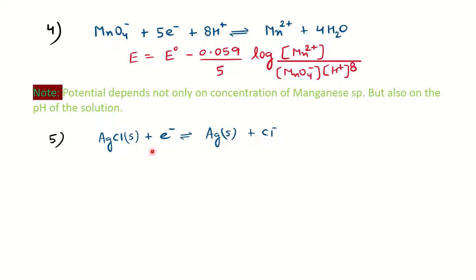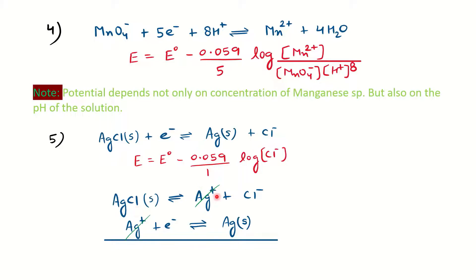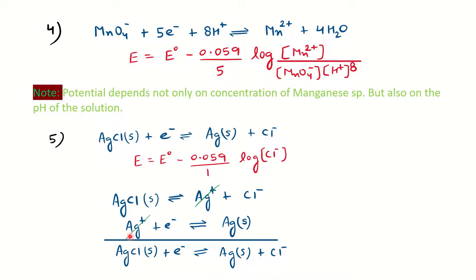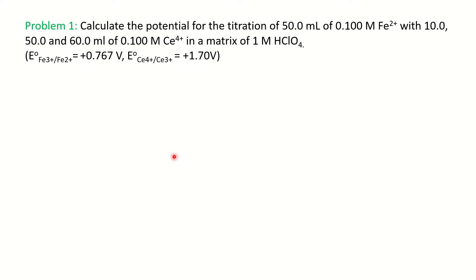The next example is AgCl solid gaining an electron to form silver (Ag) and chloride (Cl⁻). For the reduction potential, n = 1, and since AgCl and Ag are solids (concentration = 1), we write: E = E° minus 0.059 × log[Cl⁻]. This equation is derived by combining: AgCl(s) → Ag⁺ + Cl⁻, and Ag⁺ + e⁻ → Ag. Cancelling Ag⁺ from both sides gives the complete balanced equation for the AgCl cell.